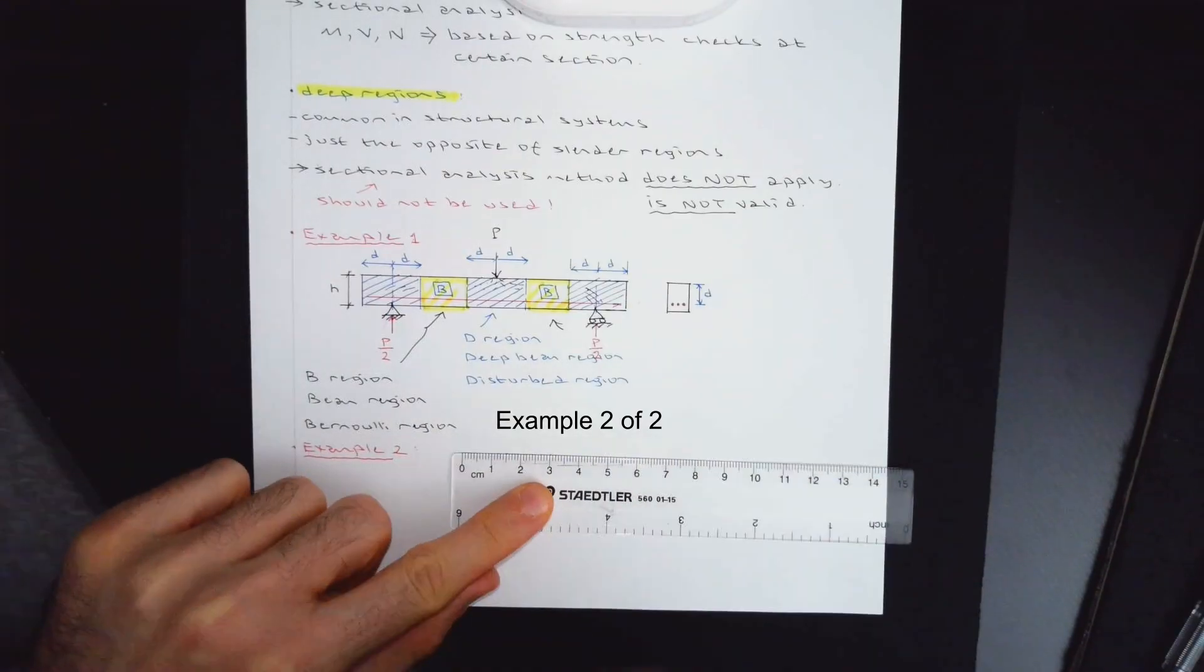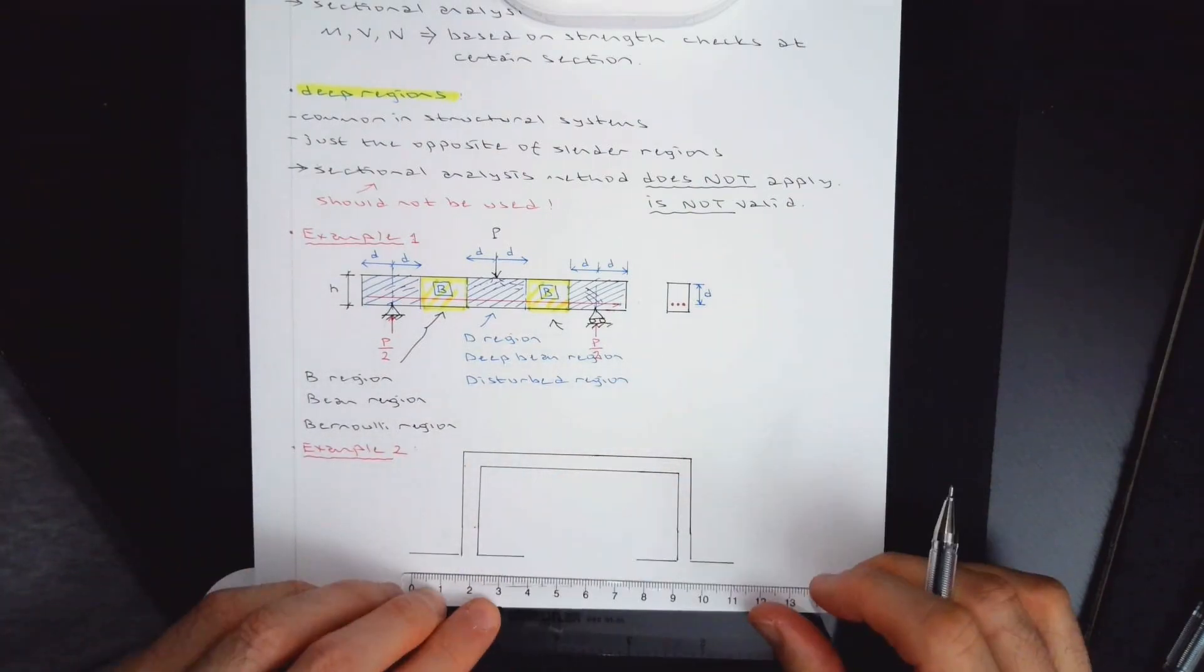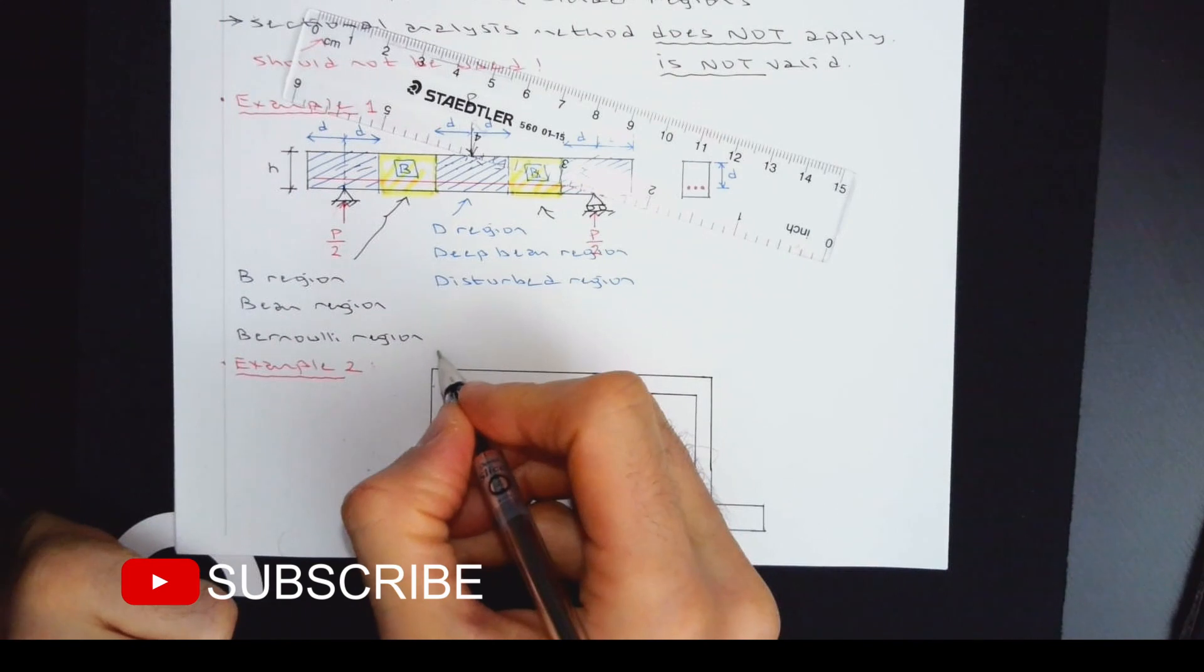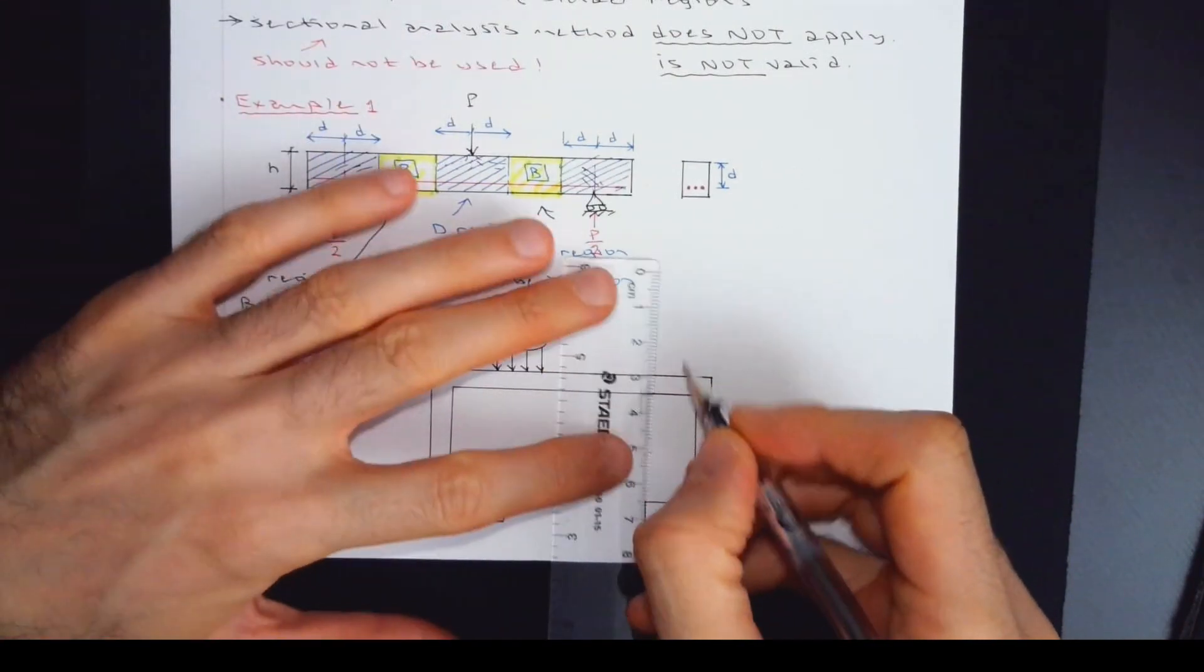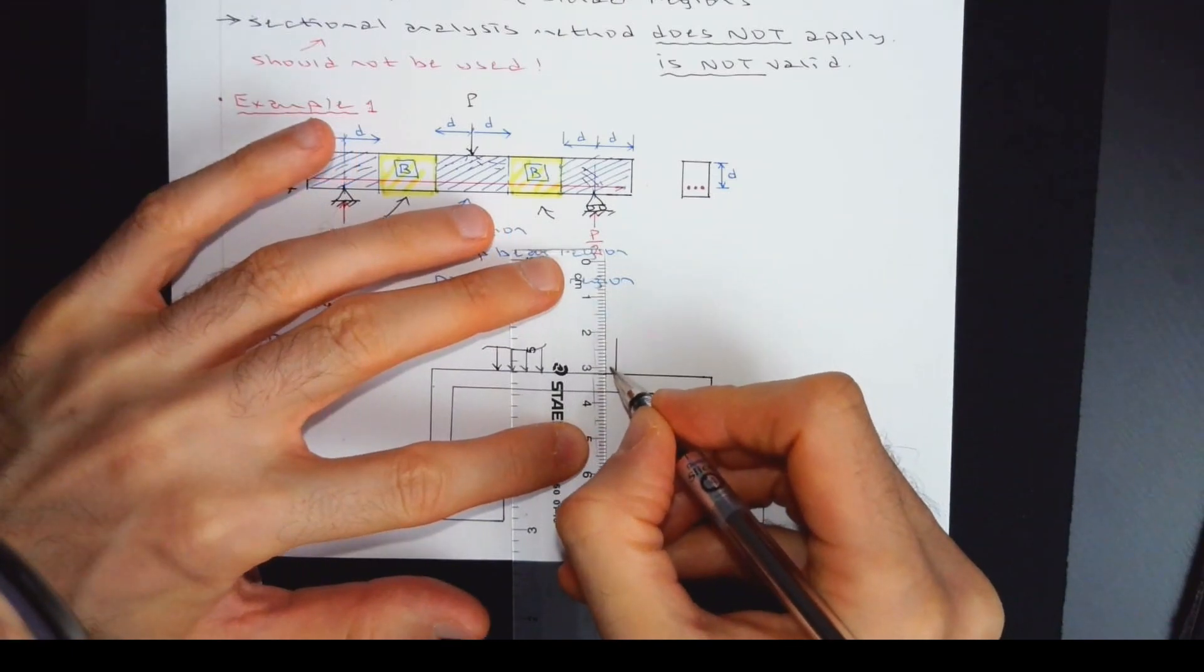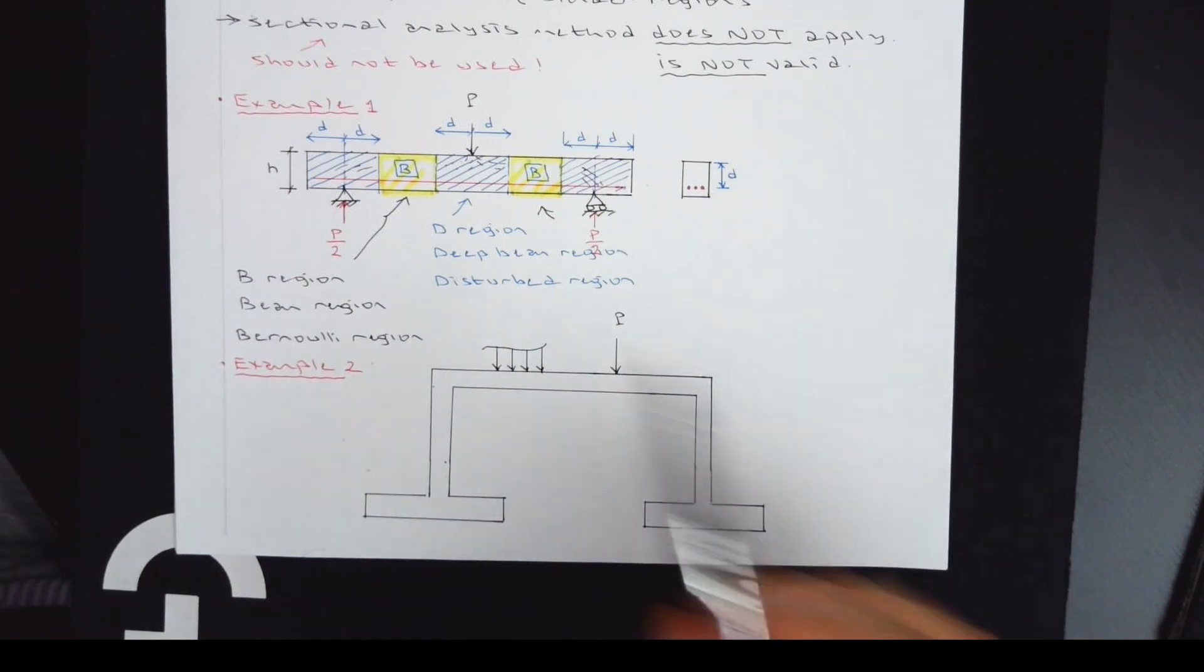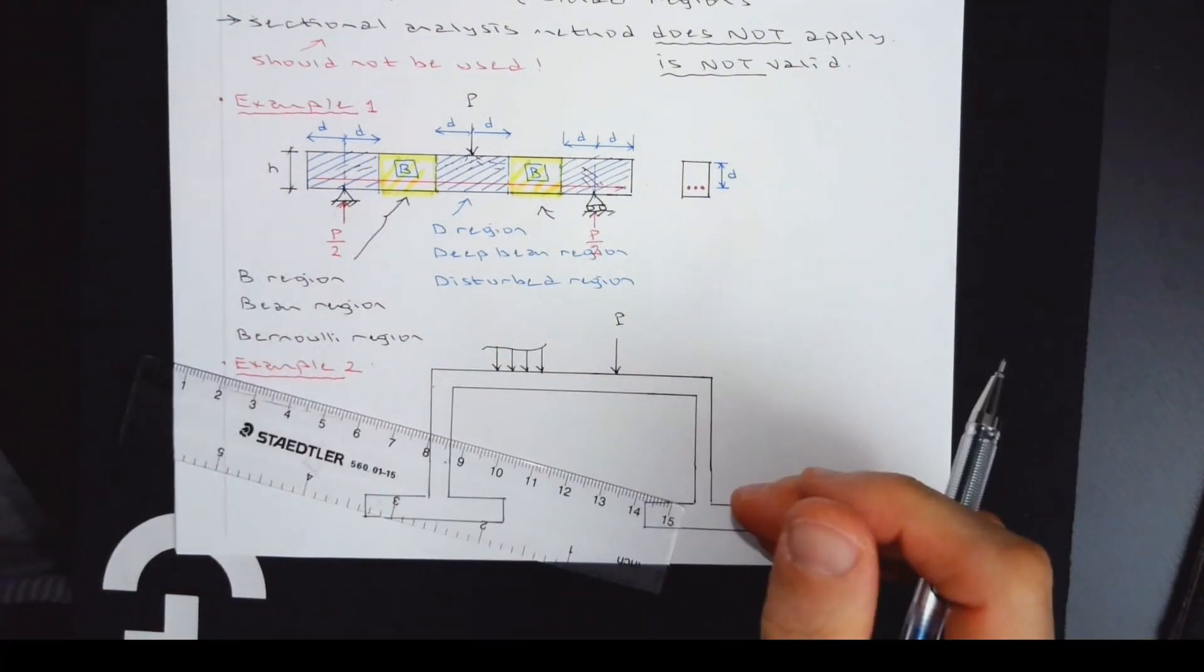In the second example, I will show you a frame. This covers also foundation elements. You might have some uniformly distributed load, or you might have a point load applied. So the question is how to identify d and b regions. I'm just going to identify d regions. Whatever remains would be your b region.